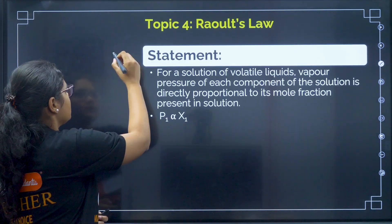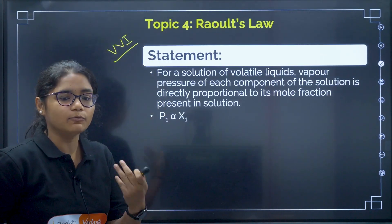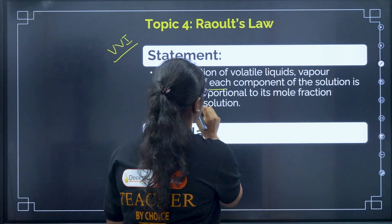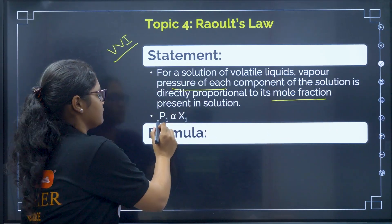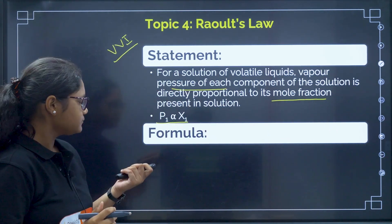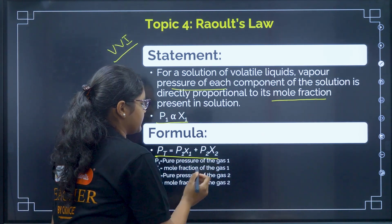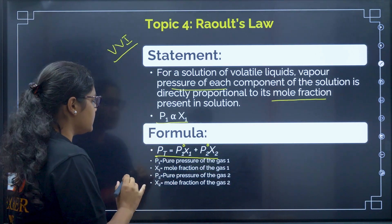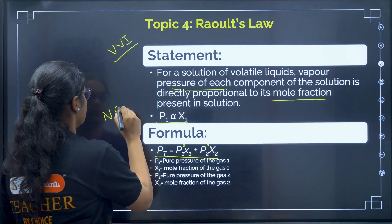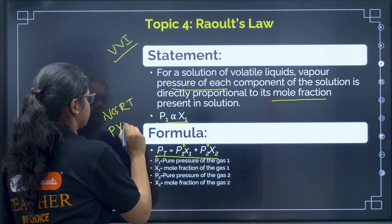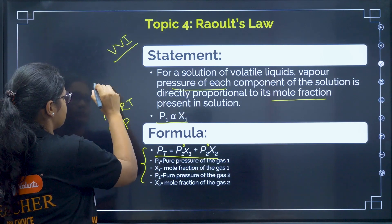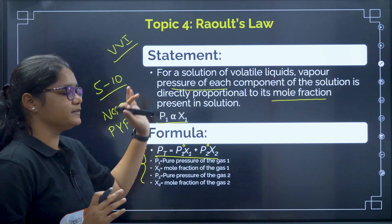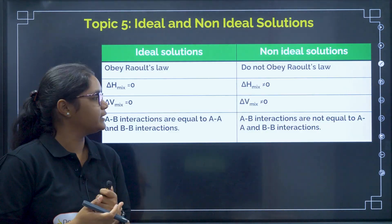Next is Raoult's law — this is an important topic where you have to give a little more time. The statement says the pressure of the gas will be proportional to its mole fraction: P₁ is proportional to x₁. Total pressure is calculated as P°₁x₁ + P°₂x₂. Practice numericals from the NCERT book and previous year papers. Practice a minimum of 5 to 10 questions from this topic.